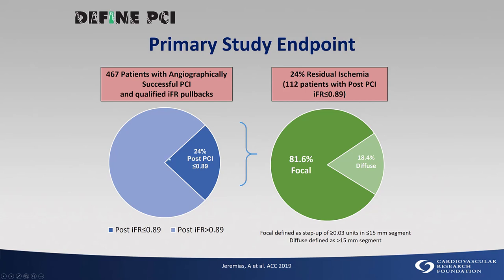Approximately one out of four patients undergoing PCI who have their non-hyperemic IFR measured post-procedure has an IFR in the ischemic range. In the majority of those — about 80% — there is a focal step-up suggesting it could potentially be treated with additional stent implantation or post-dilation.